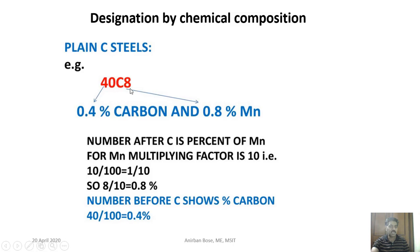To summarize the multiplying factors: for carbon percentage, it is always multiplied by 100 in the designation. For manganese, it is multiplied by 10. So 40C8 is a plain carbon steel with 0.4% carbon and 0.8% manganese.